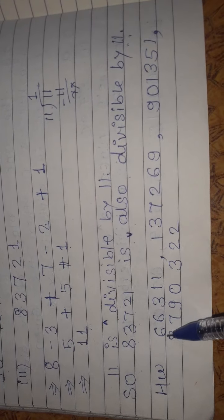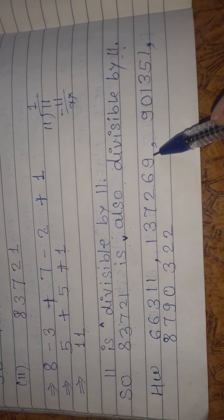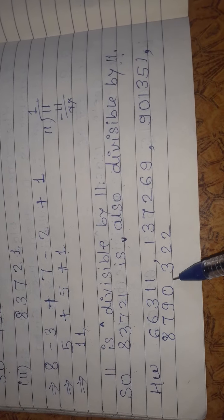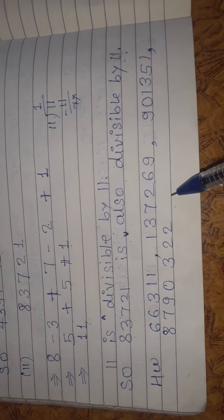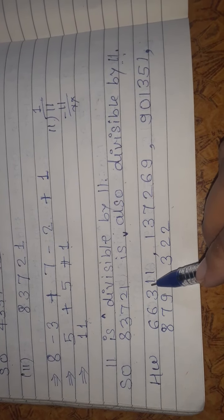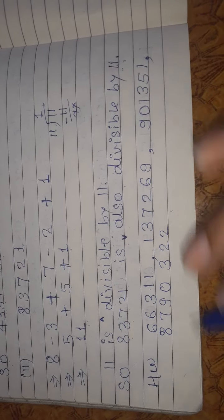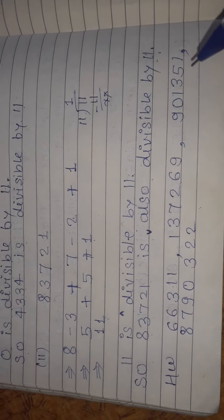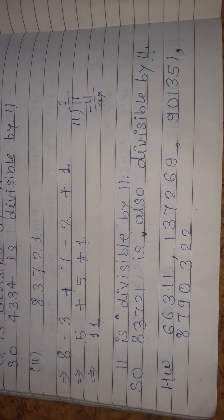For your homework, you will solve: 66311, 137269, 901351, and 8790322. You will find the alternate sum for each and check if it is divisible by 11, then determine if the number is divisible by 11.